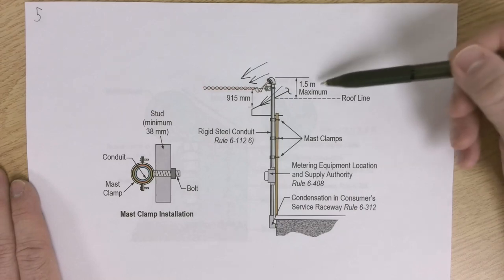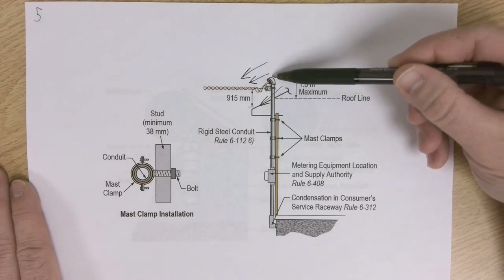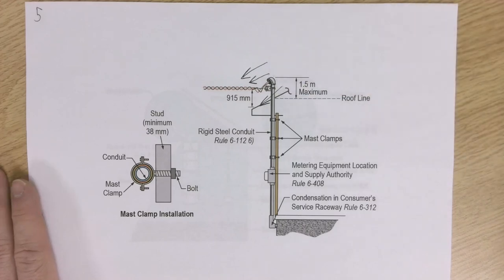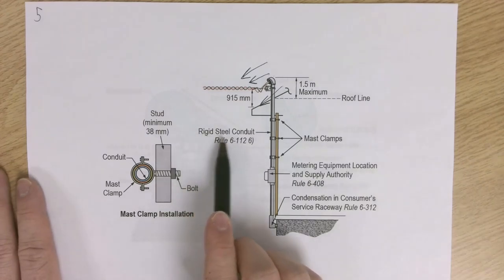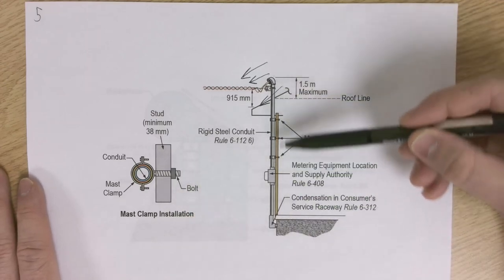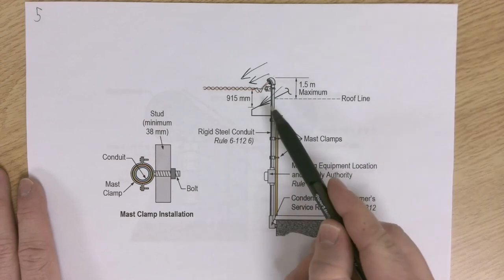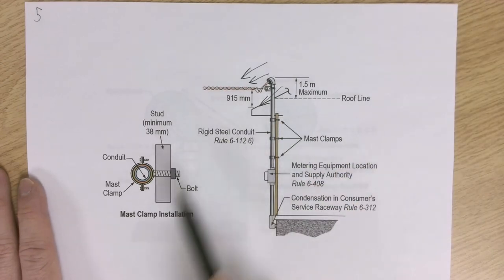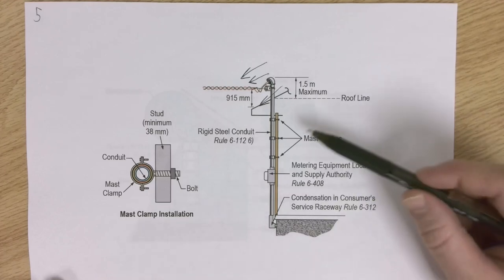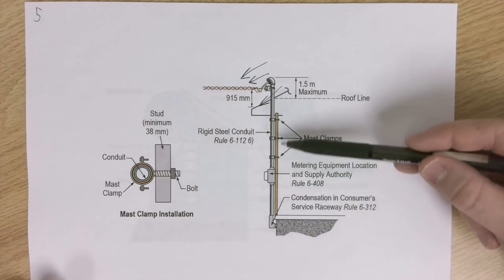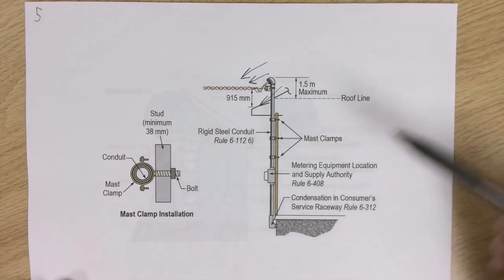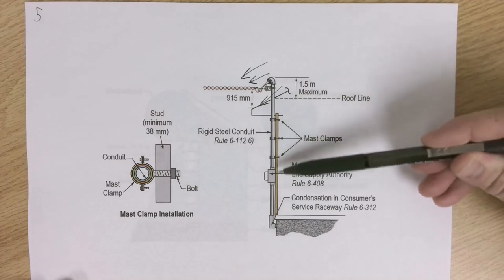There are specific rules for mast clamp installation. There will be more support necessary because once it goes through the roof, there's no support for this conduit, and we need extra support so that those overhead cables don't rip this off the wall. There are also limitations — code gives us a maximum for how far above the roof line the mast can be. It has rules for what can be used as a service mast; you can't just use PVC, which is a type of plastic piping, because that's going to break much easier than rigid steel conduit. We have mast clamps — not just straps — that provide more support to this conduit.